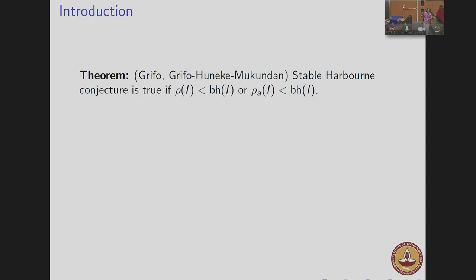Griffo, Huneke, and Mukundan showed that the stable Harbourn conjecture is true if the asymptotic resurgence or resurgence is strictly less than the big height of I. In their paper, when this happens, they call it expected resurgence. So when an ideal has expected resurgence, the stable Harbourn conjecture is true.